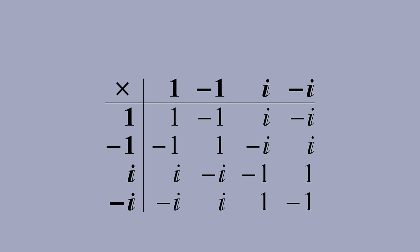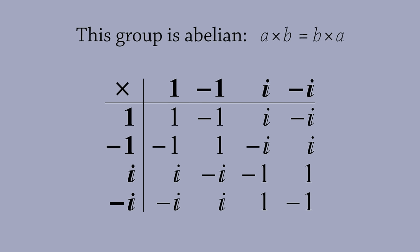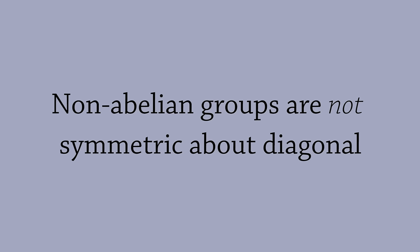Another property worth noting is that this table is symmetric about the diagonal. If you flip the group along the diagonal, you get the same table. This is because the group is abelian for any two elements a and b. If the group were non-abelian, then the multiplication table would not be symmetric.